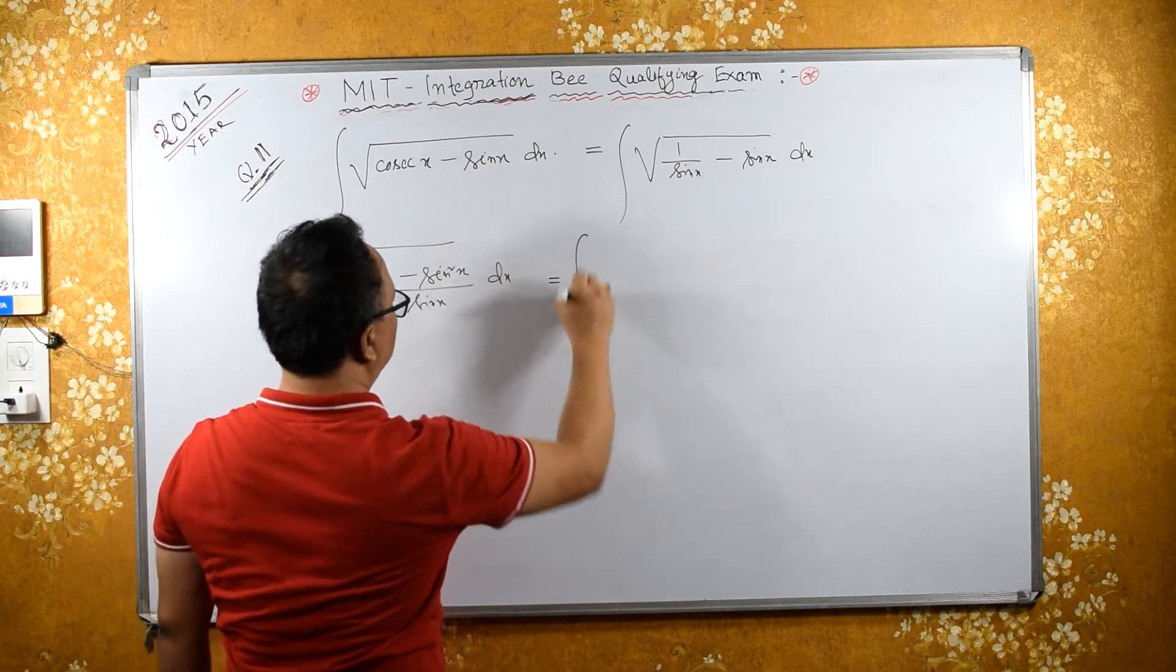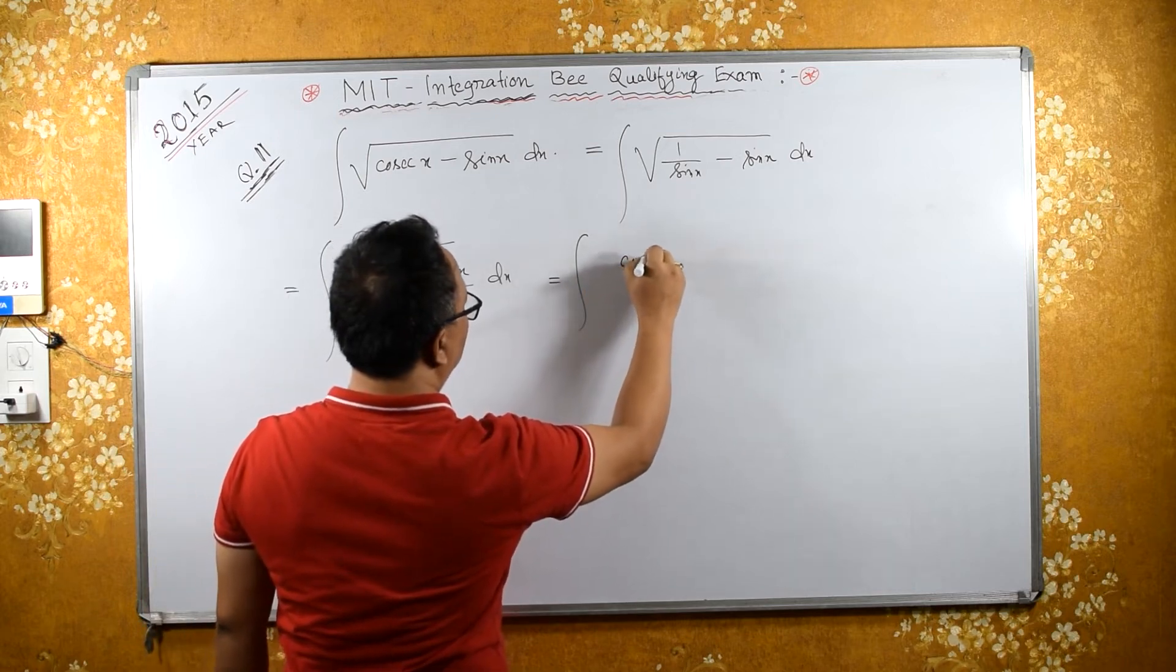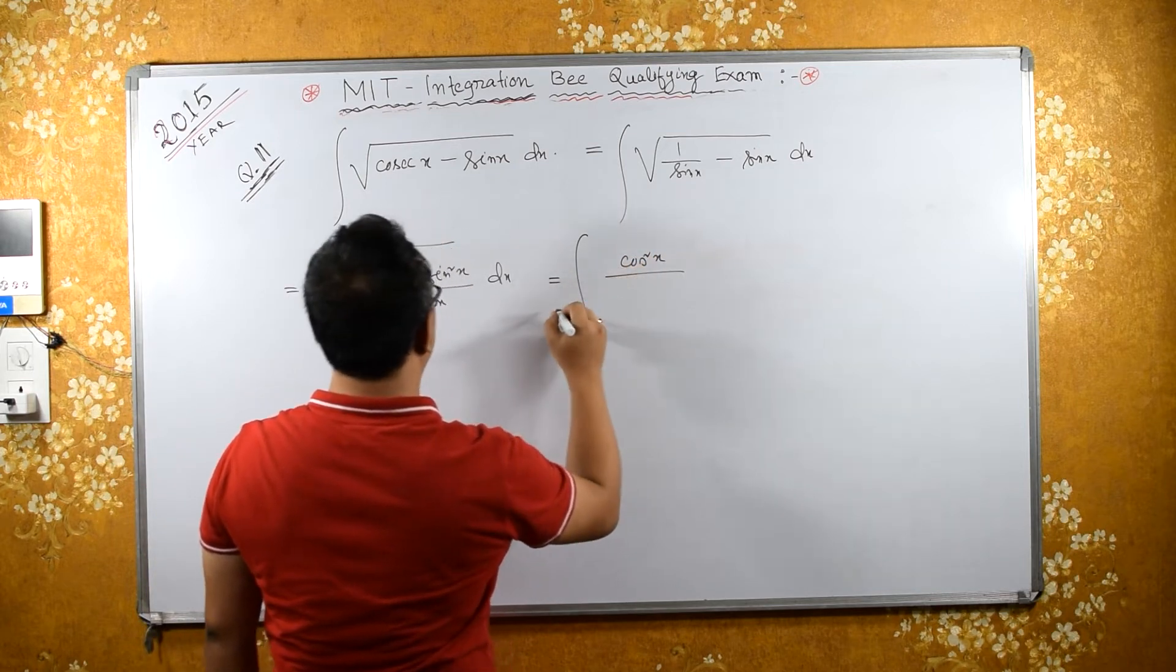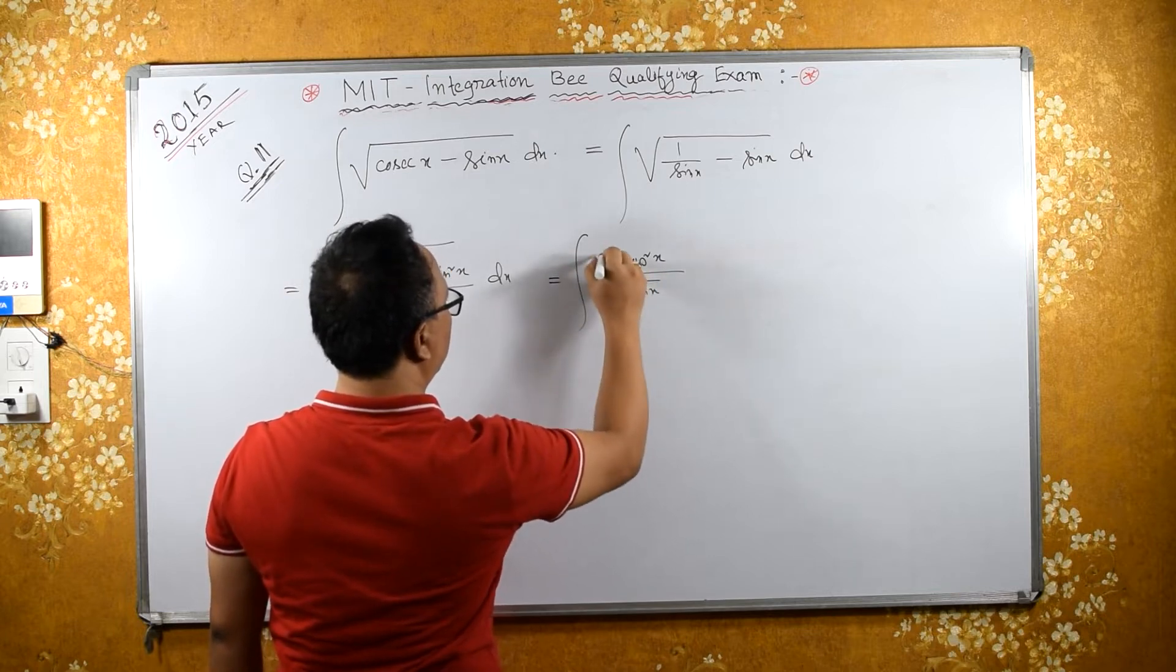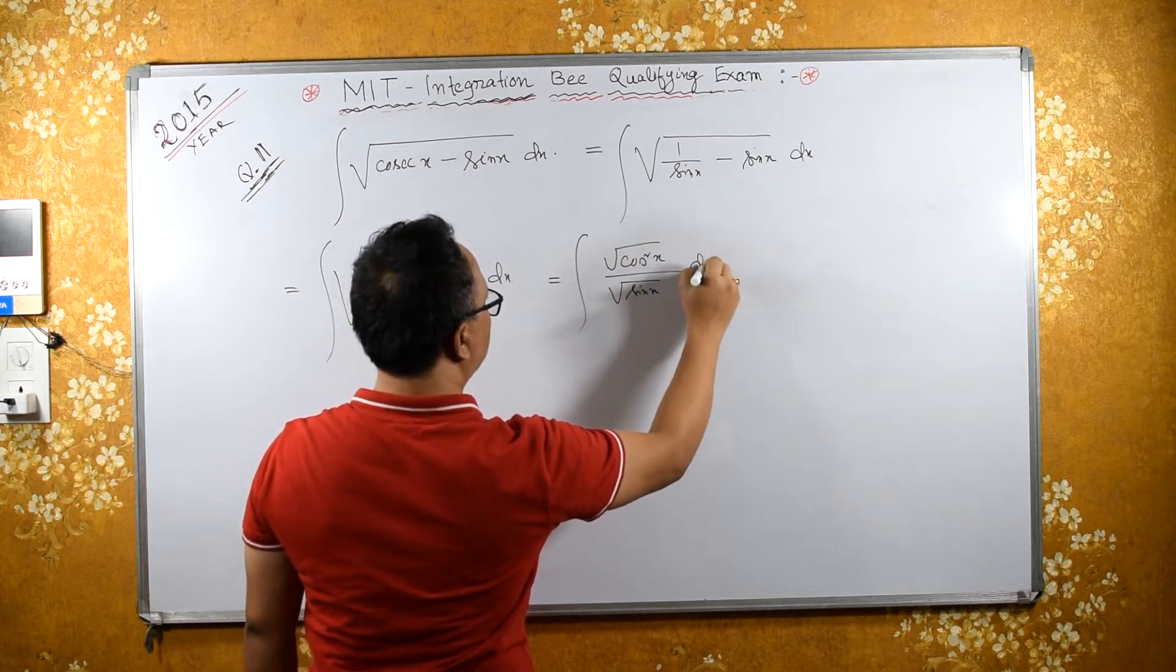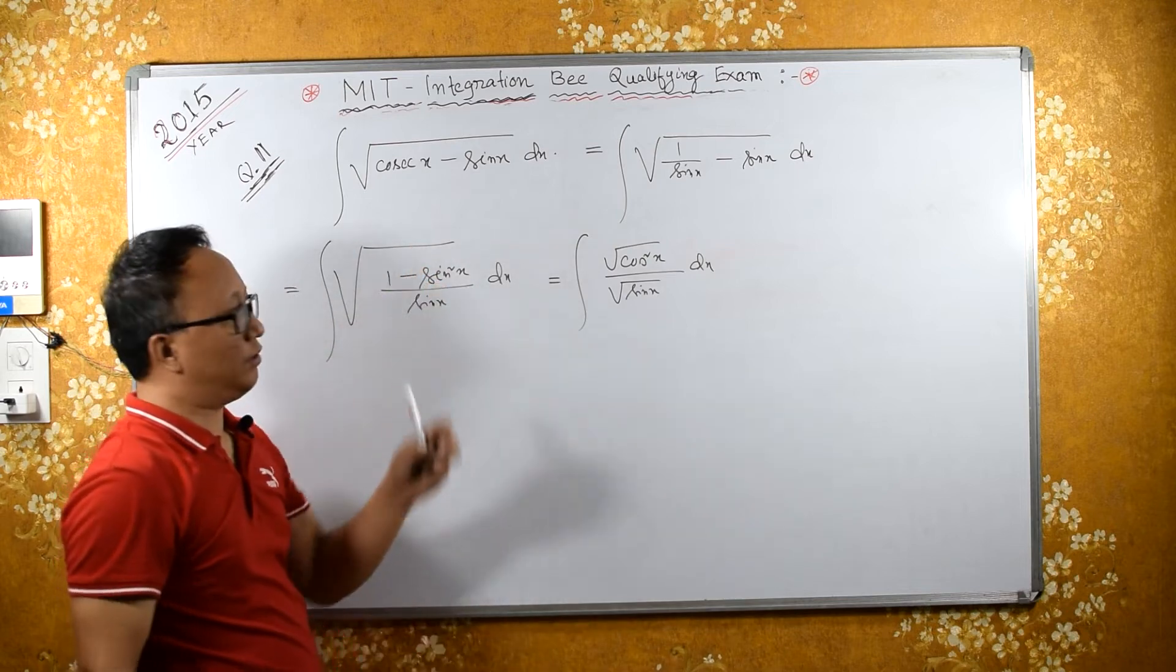This equals integral of cos square x upon sin x under square root. Let's separate the integral and square root also.